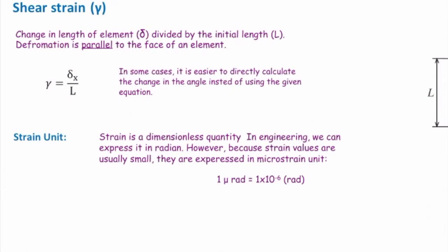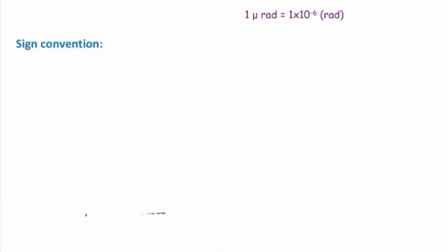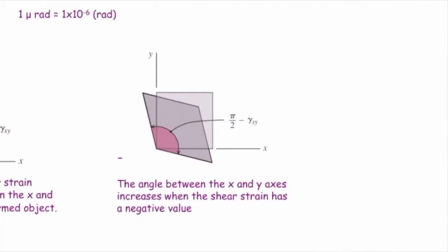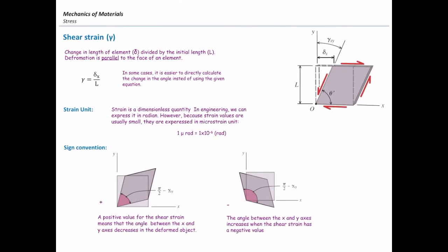The sign convention for shear strain is, if the angle gets smaller, we call that positive. So, look at this. If the original angle is 90 degree, if it's pi over 2, if it gets smaller, we call that as positive shear strain. And if the angle gets larger, larger than 90 degree, the change in the angle is called to be negative. It's just a convention.